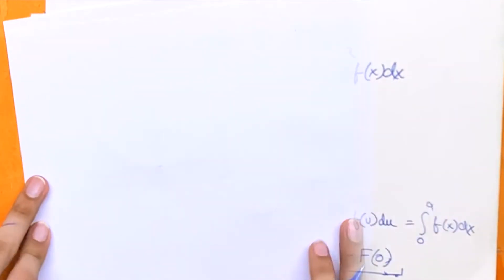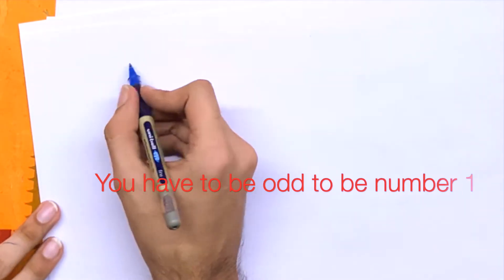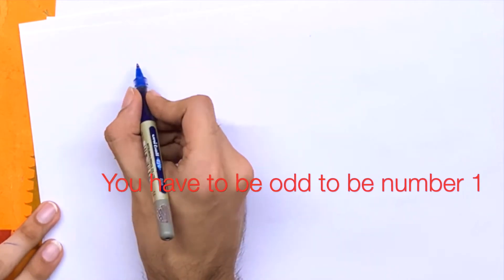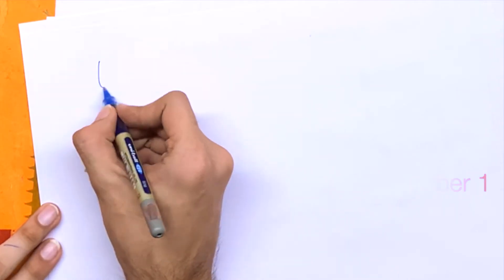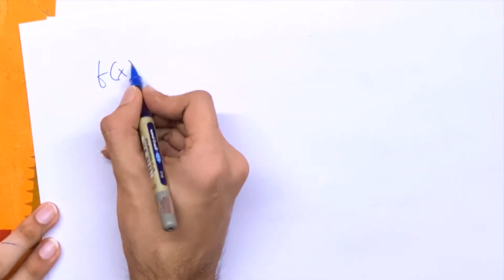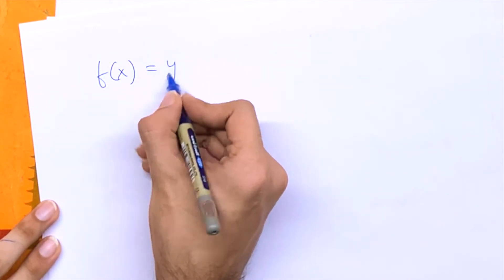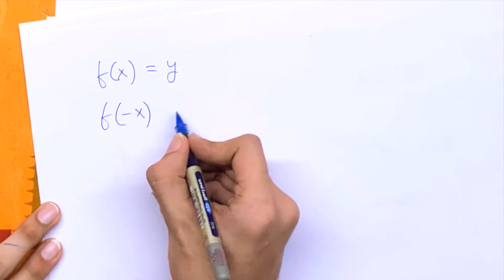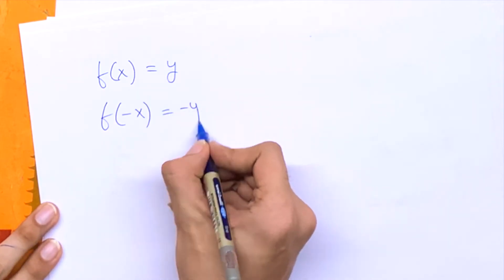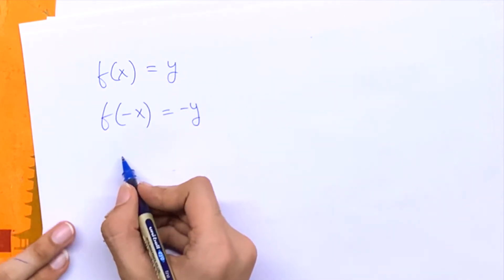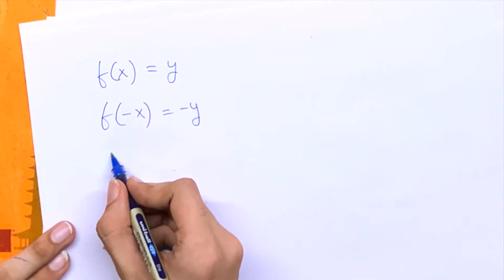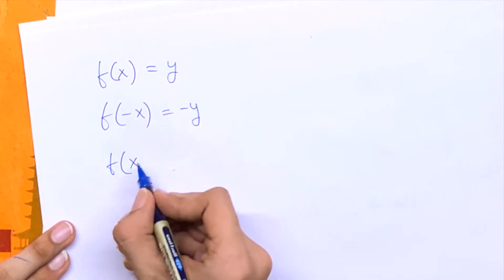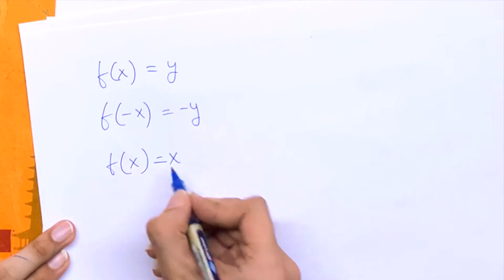Now let's look at the odd function. An odd function is defined as: if f(x) equals y, then f(-x) must equal -y. An example is f(x) = x.